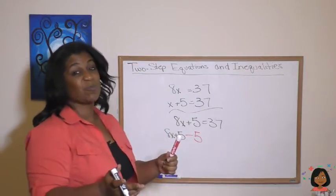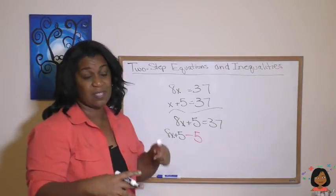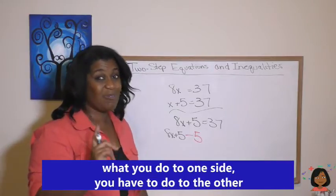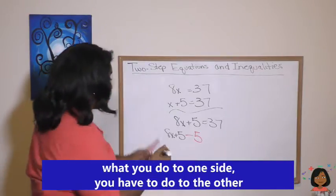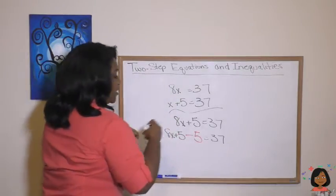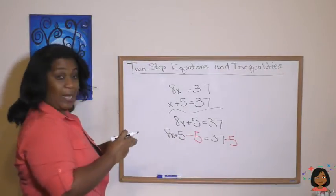Now, the thing about algebra is you have to keep both sides of the equation in balance. So we just can't subtract 5 from one side and not the other. What you do to one side, you got to do to the other. So I'm going to write my other side of the equation. It's going to be 37. And I'm going to subtract 5 from this side.